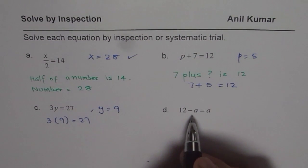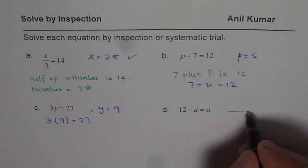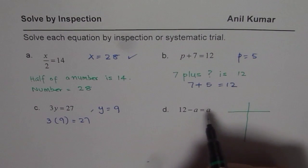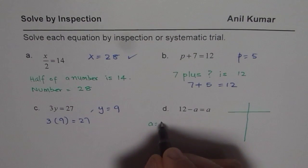The last one here is 12 minus a equals a. Now what we can do in such cases is that we do not know what a should be, so we can try out different values of a. Let us take a as 4.